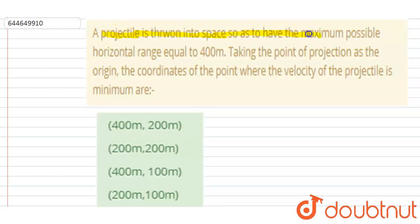into space so as to have maximum possible horizontal range equal to 400 meters. Taking the point of projection as the origin, find the coordinates of the point where the velocity of the particle is minimum.